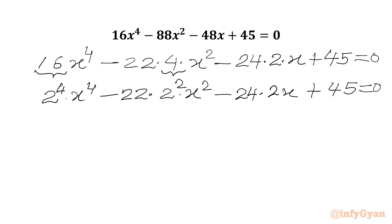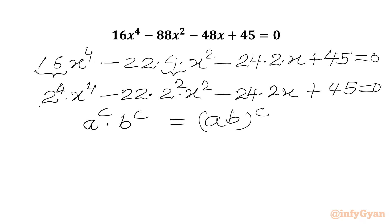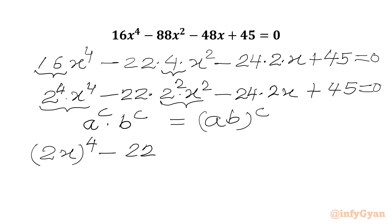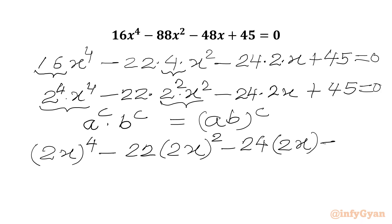Now we will use one powerful exponent law which says a^c times b^c equals (ab)^c. We are going to apply this property here, and we can write (2x)⁴ minus 22 times (2x)² minus 24 times 2x plus 45 equals 0.